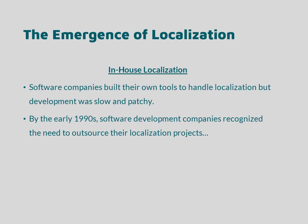By the early 1990s, software companies realised, according to Essilink, that localisation was not their core business, and they began to outsource their projects. This need to outsource led to the emergence of the localisation industry, as translation service providers began to rebrand themselves as localisation agencies, in order to respond to the growing need for effective and efficient localisation.